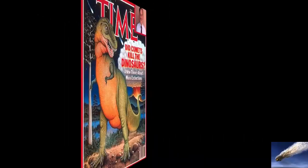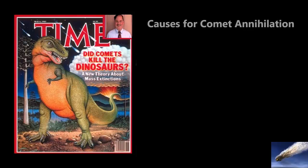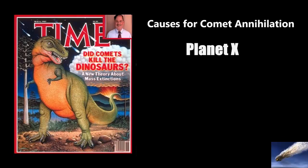Whitmire's theory on mass extinction was published in the 1985 Time Magazine cover story, titled Did Comets Kill the Dinosaurs? The publication gave three explanations for regular comet showers. One of them was the existence of Planet X.